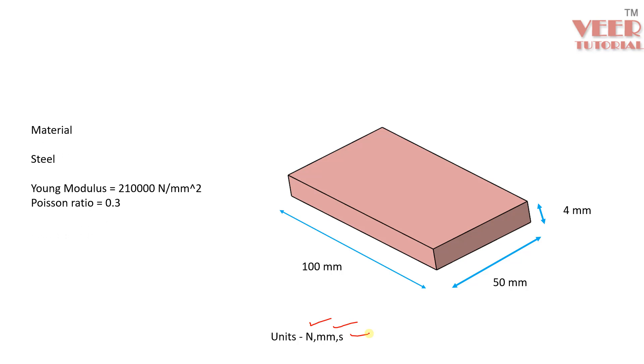For this steel material, we know that this is the value of Young's modulus and this is the value of Poisson's ratio. So, this is a linear type of analysis. It means the force is directly proportional to the displacement.